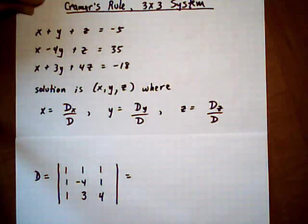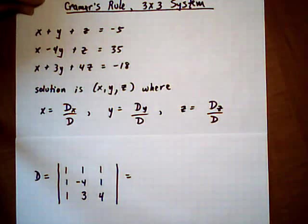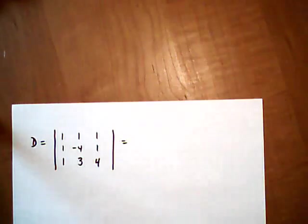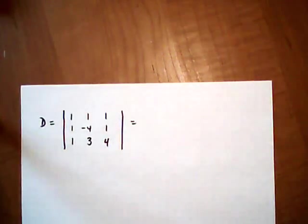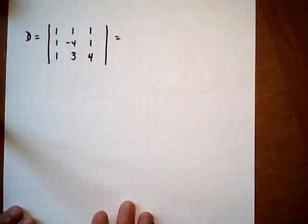Alright, so we'll evaluate that later. First, we want to build Dx, Dy, Dz, so we can get our ratios and figure out x, y, and z. So I'm going to move this over. All we need in order to build our new determinants is to look at the D and take pieces of it.